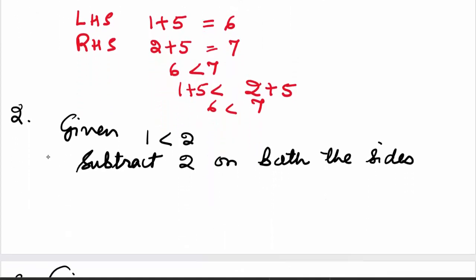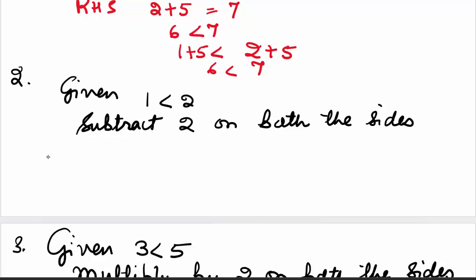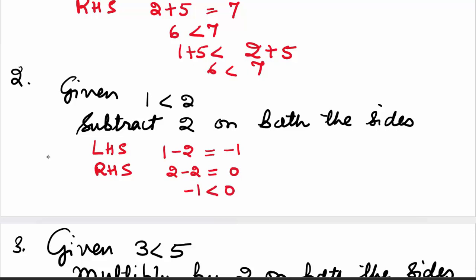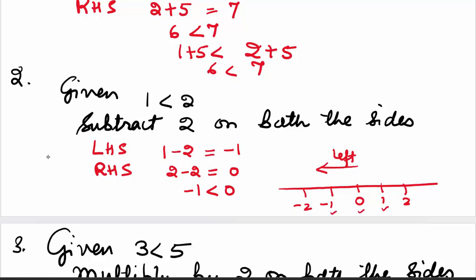Look at the second example. We are given 1 is less than 2. Now subtract 2 on both the sides. The left-hand side becomes 1 minus 2, which is minus 1, and the right-hand side becomes 2 minus 2, which is 0. Minus 1 is less than 0. On the number line, we have 0, 1, 2 on the right and minus 1, minus 2 on the left. As we move towards the left, numbers become smaller. So minus 1 is smaller than 0; the inequality did not change.